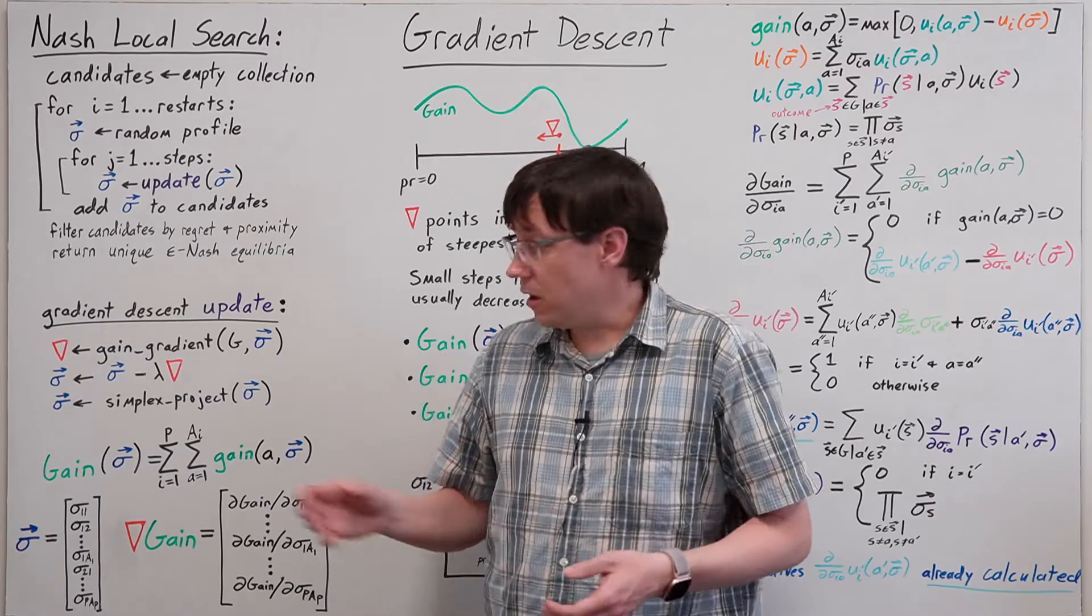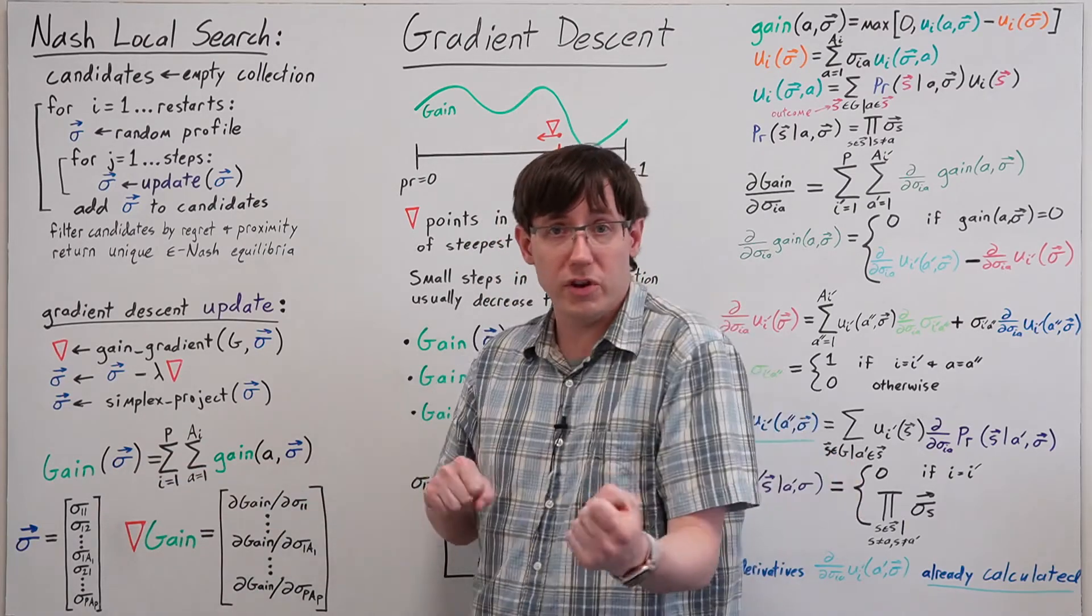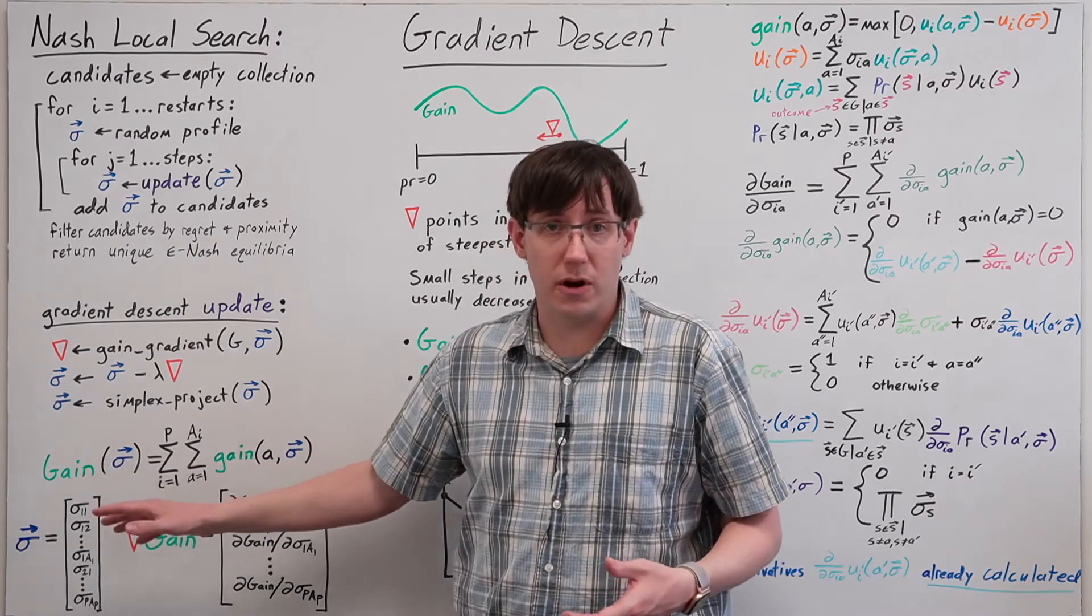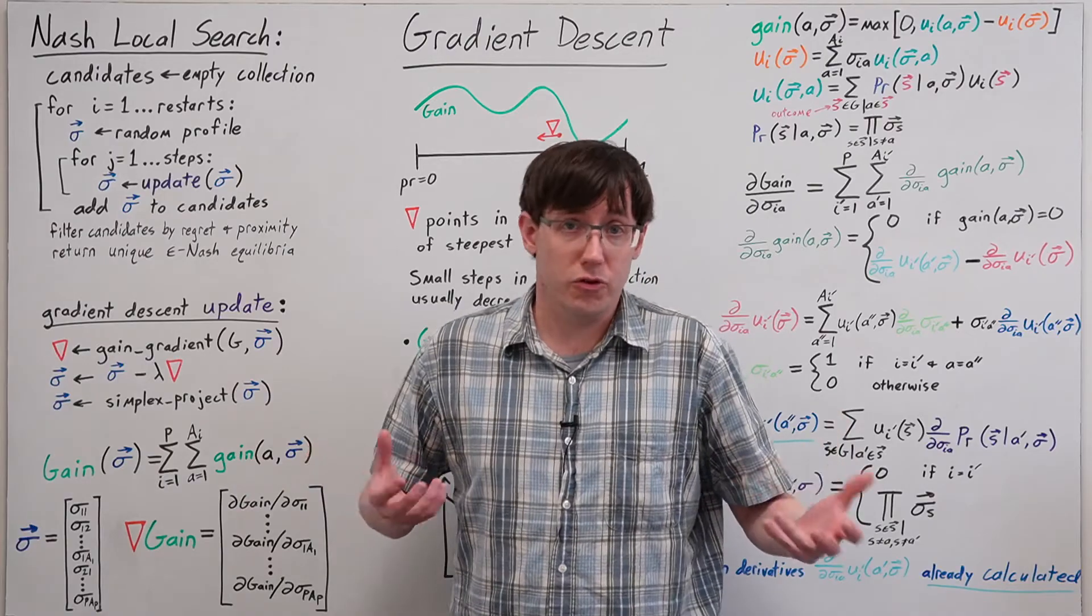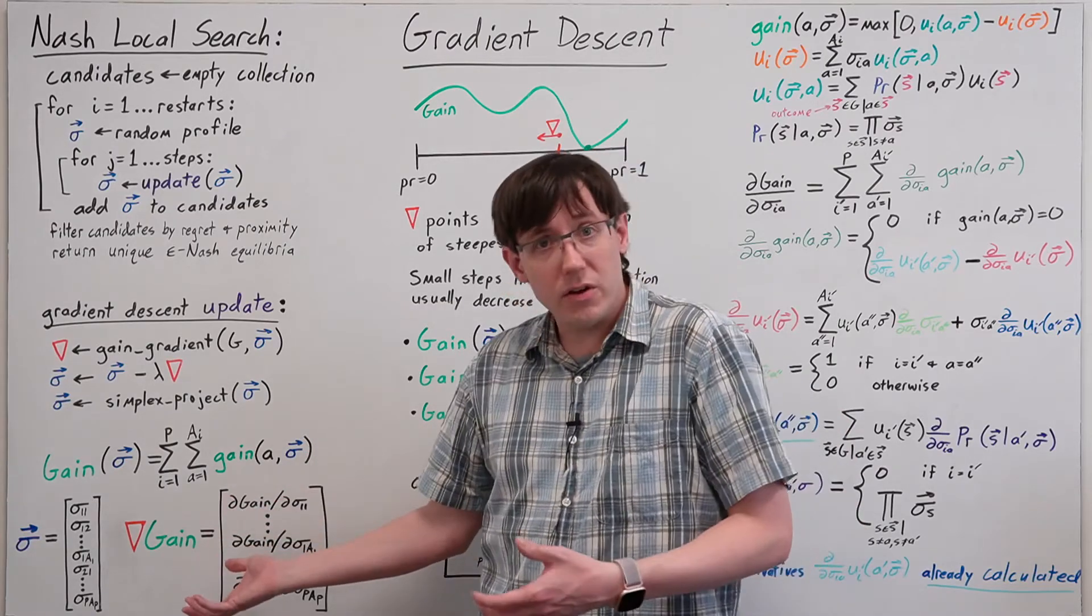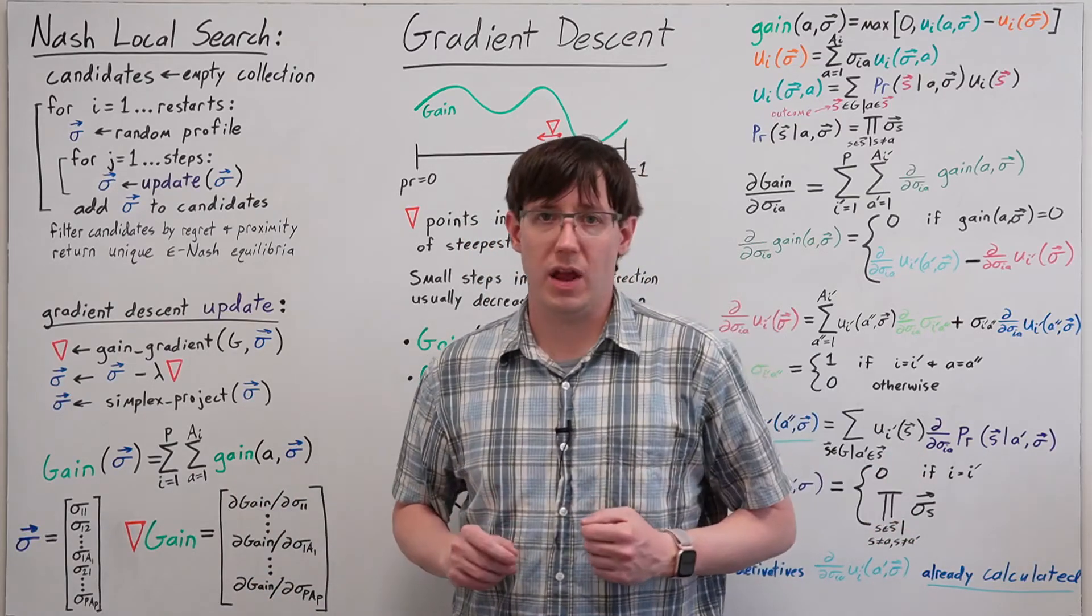Since the global minima of the gain function correspond to Nash equilibria, we can try to minimize this gain function as a way of searching for Nash. If we can calculate the gradient of the gain function, then we can do that minimization using gradient descent.